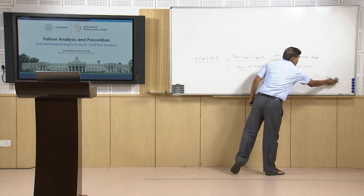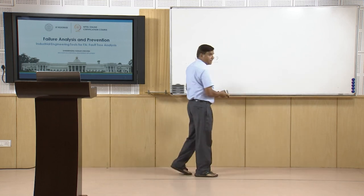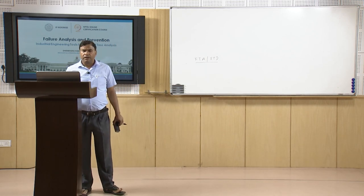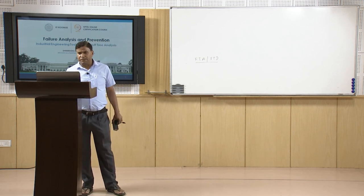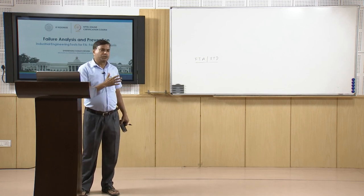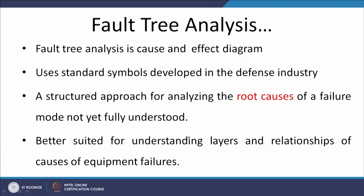The fault tree diagram talks about the various causes present at different layers which can lead to the failure of a product or process. Fault tree analysis is a cause-and-effect diagram and uses standard symbols for developing the diagram. It is used extensively in the field of safety and defense industry to see what can go wrong at a particular stage so that corrective action can be taken. It is a structured approach for analyzing root causes of failure, especially those modes which are not yet fully understood, and is well suited for understanding the different layers and relationships between causes.